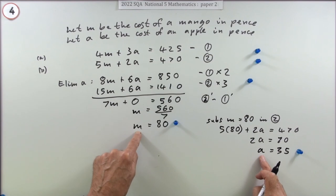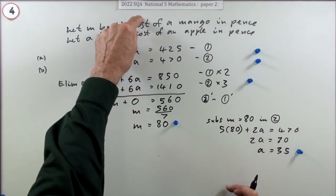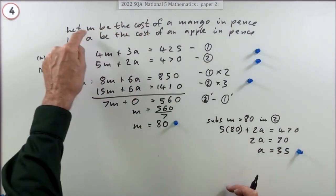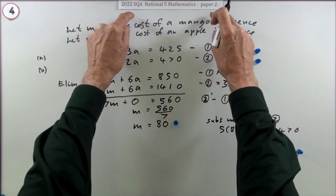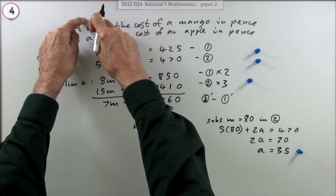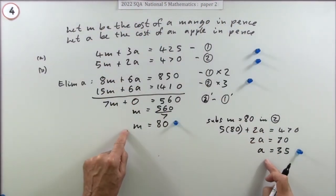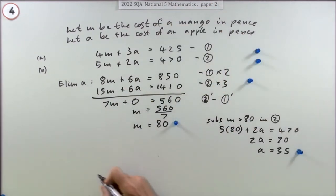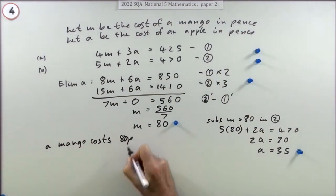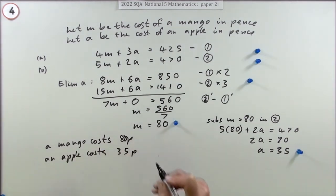Those m's and a's were your own private variables. The question didn't say what's the value of m and a. The question said what's the cost of a mango and apple. So translate them back to the original words. m equals 80 means the cost of a mango is 80 pence. An apple costs 35 pence. Having done that, you get the final mark.